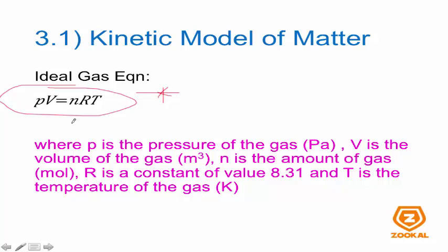For PV equals nRT: P is the pressure of the gas in pascals, V is the volume of the gas in cubic meters — not cubic centimeters, cubic meters — n is the amount of gas in moles, R is a constant value of 8.31, and T is the temperature of the gas in Kelvin.